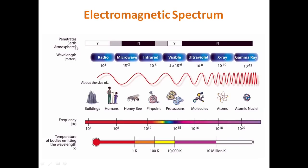Wherever you see 'Y', that particular part of the electromagnetic spectrum can penetrate the earth's atmosphere, meaning radiation in that wavelength range can travel from the earth's surface to space and vice versa. Where you see 'N', those spectrums cannot travel through the earth's atmosphere. Gray shaded areas represent transition zones.